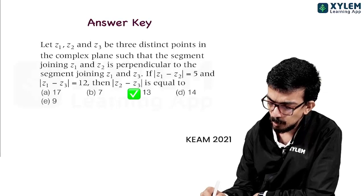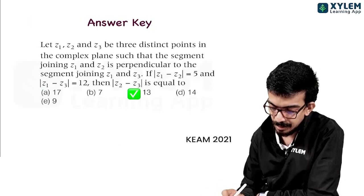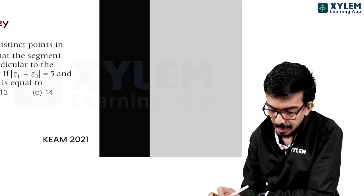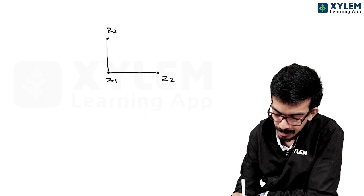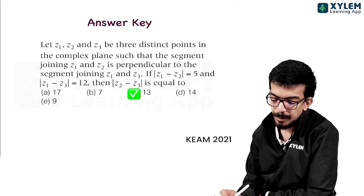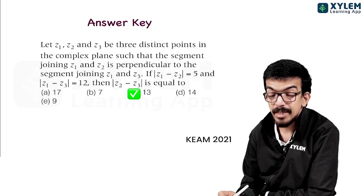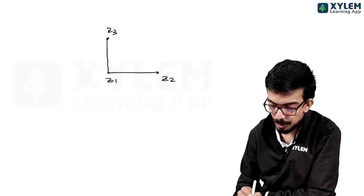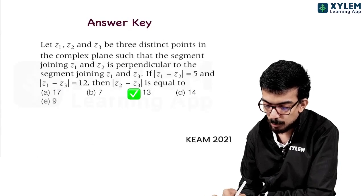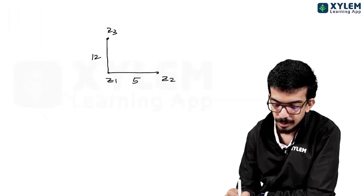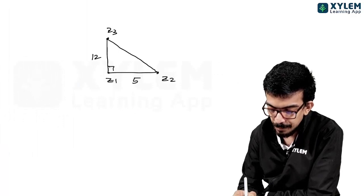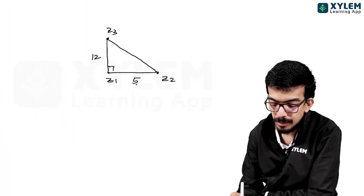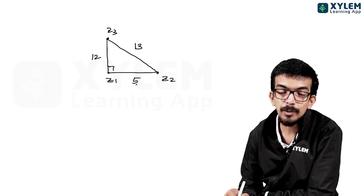Simple question. Represent the 3 points in the complex plane. Z1 and Z2 join the line segment, and Z1 and Z3 is perpendicular to that segment. This is the right angle. Modulus of Z1 minus Z2 is 5 and modulus of Z1 minus Z3 is 12. So modulus of Z2 minus Z3 is root over 12 squared plus 5 squared, which is 13.